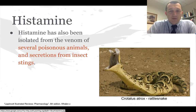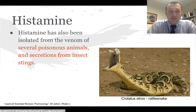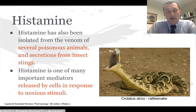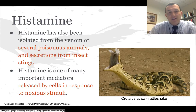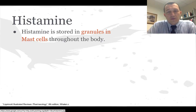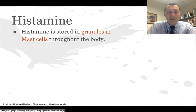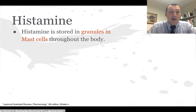Histamine has also been isolated from the venom of several venomous animals and insects, including rattlesnakes, which would explain a lot of the reaction from those bites or stings. Histamine is one of the very important mediators released by cells in response to noxious stimuli. Histamine is stored within mast cells in granules, and that granule is actually protecting the histamine, because if histamine is free to float through plasma it gets degraded very quickly - so in order for it to have any effect, that effect has to be rapid before it gets degraded.